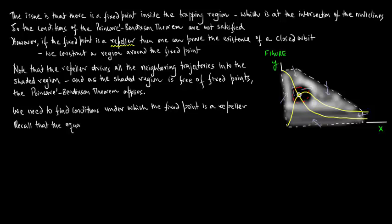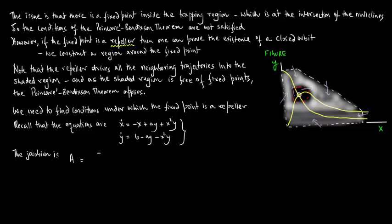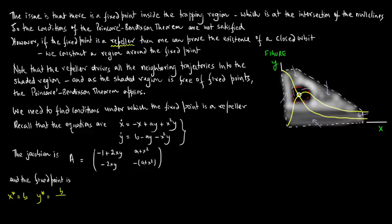Recall that the equations are x-dot equals minus x plus Ay plus x²y and y-dot equals B minus Ay minus x²y. The Jacobian of this system is: A = [(-1 + 2xy, A + x²), (-2xy, -(A + x²))]. The fixed point is x* equals B and y* equals B divided by (A plus B²).